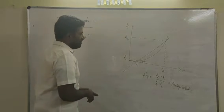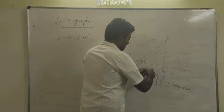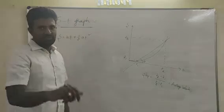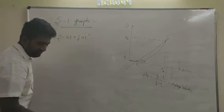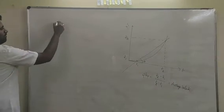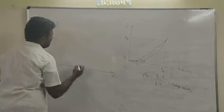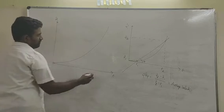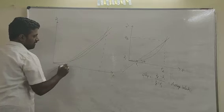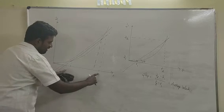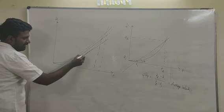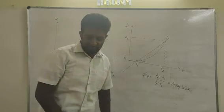In order to find instantaneous velocity, I need to keep on reducing the time interval. If I make the time interval almost equal to zero, it reduces itself to an instant. Observe — this span covers a certain time interval. I am reducing the time interval. The time interval has been reduced. If I keep on reducing the time interval, at one point this straight line will become tangent to the graph.